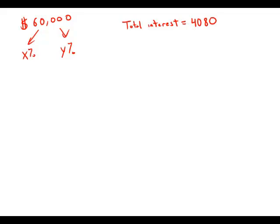A total of $60,000 was invested for one year. Part of the amount earned simple interest at the rate of X percent per year, and the rest earned simple interest at the rate of Y percent per year. If the total interest earned by the $60,000 for the year was $4,080, what is the value of X?